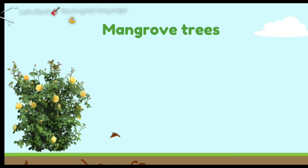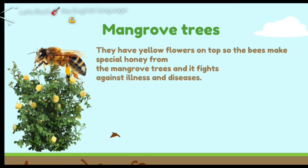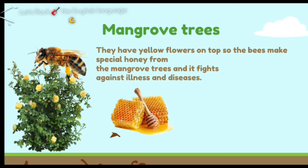As you see in the pictures, the mangrove trees have yellow flowers. The yellow flowers help the bees to make a special kind of honey. This honey is special as it fights against many illnesses and diseases. So it's a very special thing to get honey from the mangrove forest, as it fights against many illnesses and diseases.